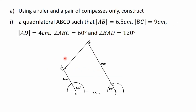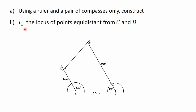This is the quadrilateral we constructed in the previous video. The next part of the question says that we should construct L1, the locus of points equidistant from C and D. We have learned from the previous videos that the locus of points equidistant from two fixed points is the perpendicular bisector of the line joining the two fixed points. So here, the locus of points equidistant from C and D will be the perpendicular bisector of the line joining point C to point D. So to get L1, we will have to bisect the line CD.